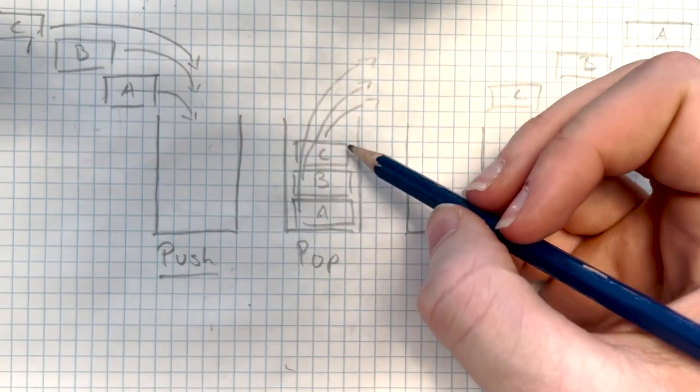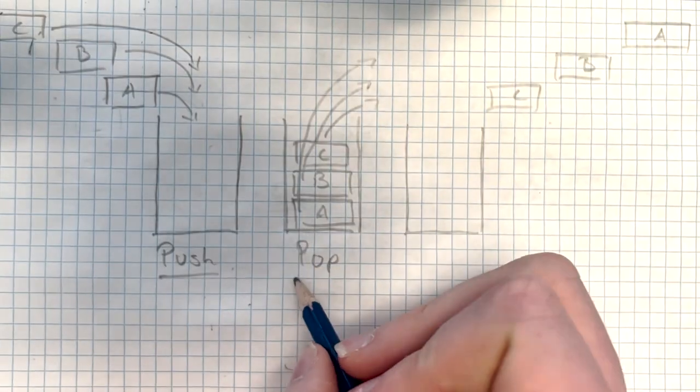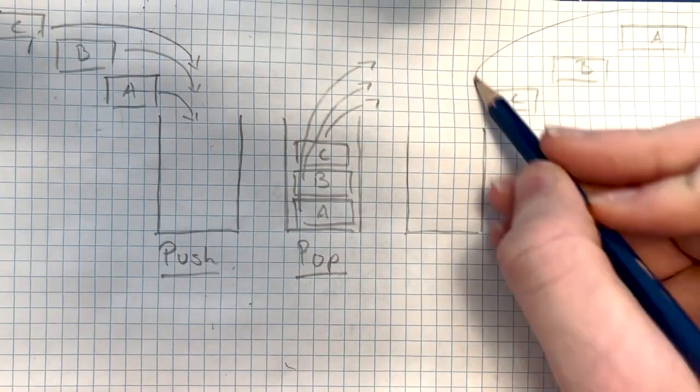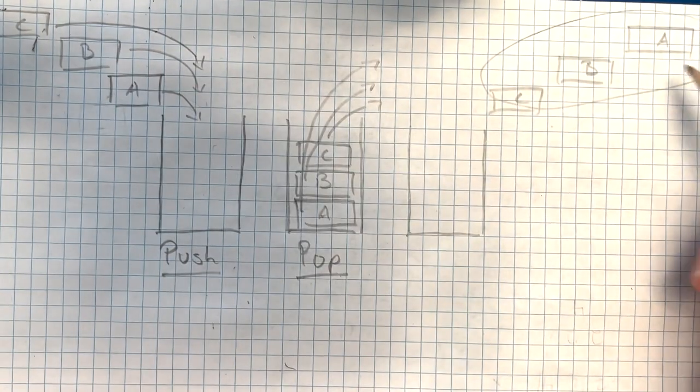then you take them all off. You're going to remove them in the order C, B, A, which is called a pop operation, and you're going to end up in the reverse order from where you put them in. You put them in A, B, C, you get them out C, B, A.